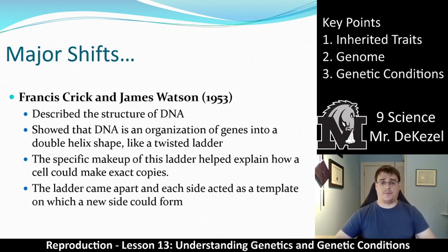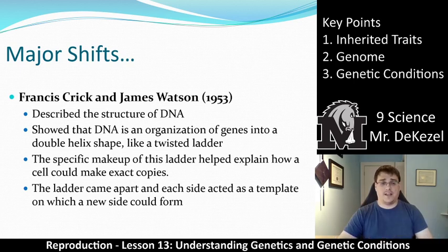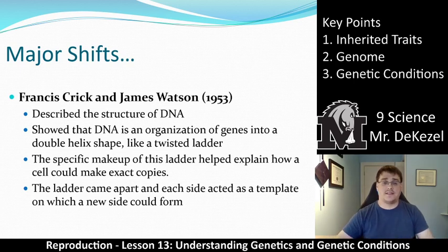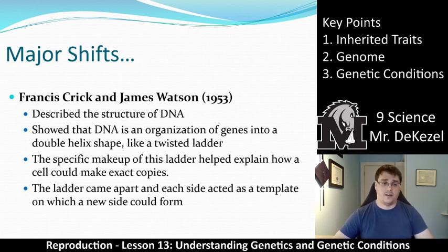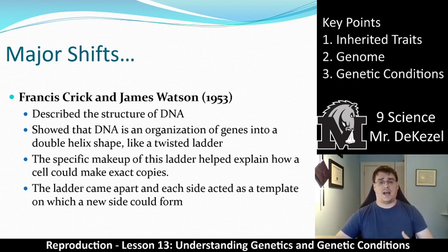The specific makeup of DNA looked like a twisted ladder. This helped explain how a cell could make exact copies — the ladder comes apart, and each side acts as a template so you can reproduce it. This makes it very quick during the S phase of interphase to duplicate your DNA. Crick and Watson described the structure of DNA and showed that genes on it controlled traits.